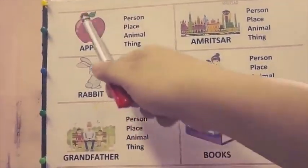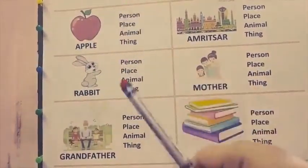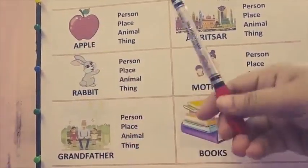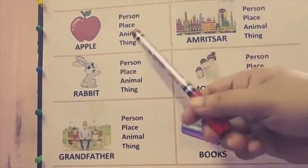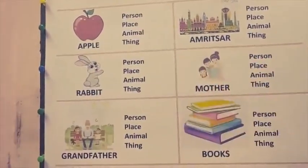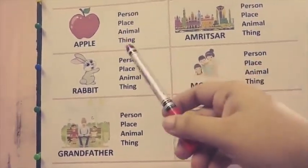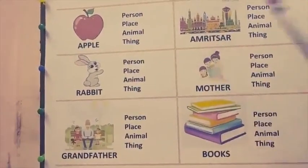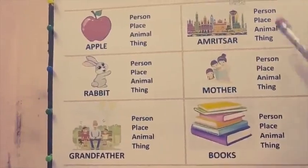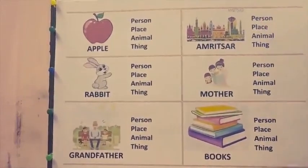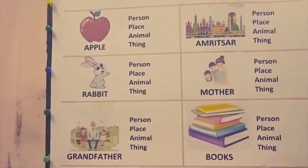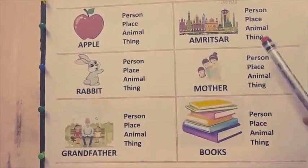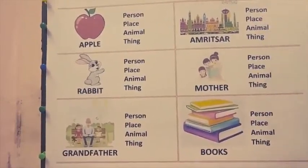What is it? Red in color, you eat it — an apple a day keeps a doctor away. Is it a person, place, animal or a thing? Yes, it's a thing. Amrit — is it a person, place, animal or a thing? Yes, it's a place. Very right.